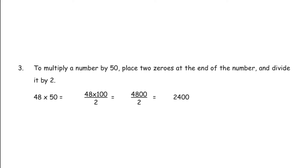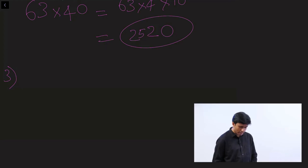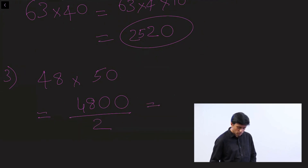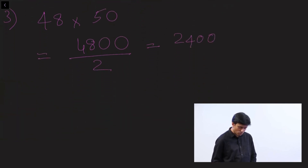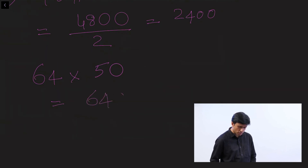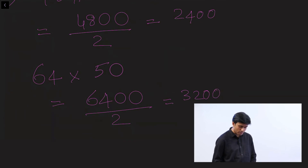To multiply a number by 50, place two zeros at the end of the number and divide by 2. For example, 48 × 50: write 4,800 then divide by 2 = 2,400. Another example: 64 × 50 → 6,400 ÷ 2 = 3,200. Remember: add two zeros, then divide by 2.